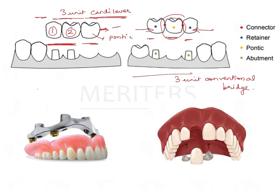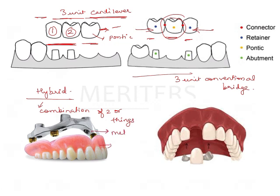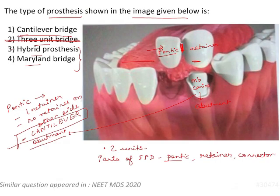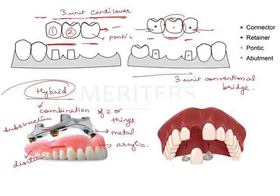The word hybrid whenever it comes means a combination of two or more things. A hybrid prosthesis is a combination of metal and acrylic — it is an implant-retained prosthesis with a metal substructure and an acrylic overdenture. Metal inside, acrylic outside. Since two types of materials are not mentioned in the question, hybrid is not the answer. Maryland bridges, as we know, have two thin retainers.